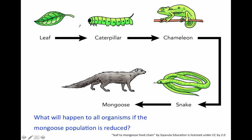Alright, how about this one? What will happen to all organisms if the mongoose population is reduced? I know reduced means to decrease. So if the mongoose population decreases, what will happen to the rest of the organisms? Please push pause at this time.